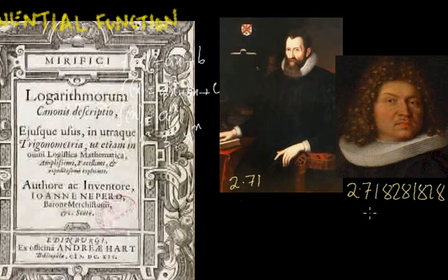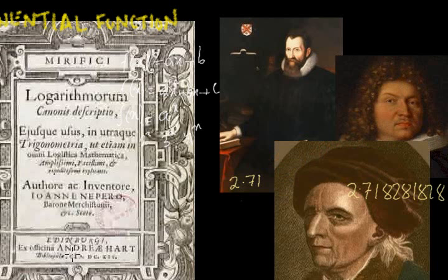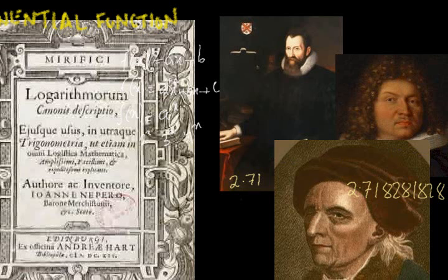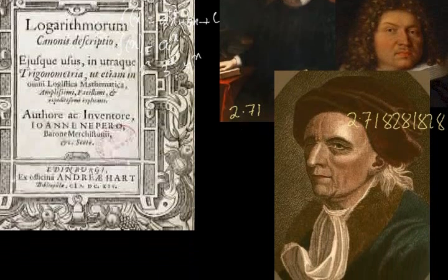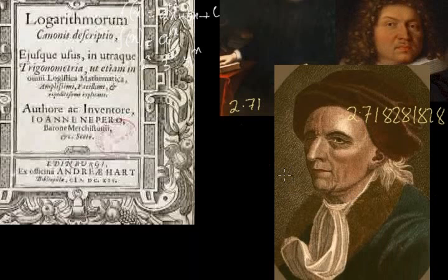This is the most famous number in the world, but it was not until 1727 that it was named. It was named by Leonard Euler, perhaps the greatest mathematician of all time. Leonard Euler was actually a student of Jacob's brother, Johann Bernoulli, and he gave it the name E.